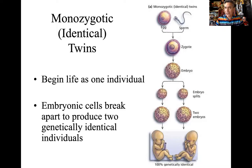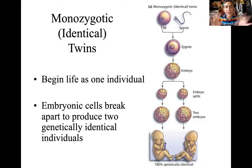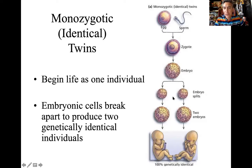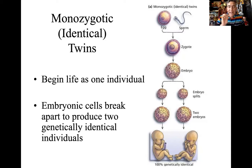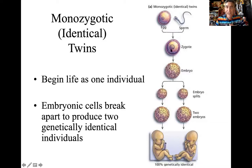The embryo breaks apart — it's not supposed to do that. Mom did everything right: she ovulated one egg, it was fertilized normally, no non-disjunctions, everything was perfect. The embryo grew, but then split apart into two little clusters. Each one of these will continue down its own genetic path and its own developmental path. So they begin life as one individual, and embryonic cells break apart to produce two genetically identical individuals — they're 100% genetically identical.